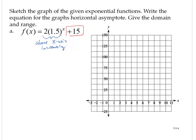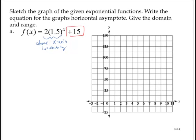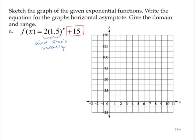We could create a table of values for that. So let's create a table for the 2 times 1.5 to the x. And then once we figure that out, we'll just add 15 to all of the outputs. So we have x versus 2 times 1.5 to the x. Let's start with a few easier values, smaller values. So how about we let x equal 0, 1, and 2.